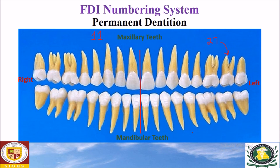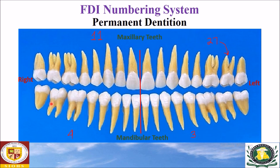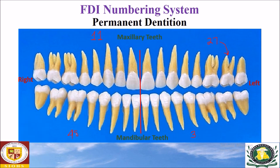The mandibular left quadrant is referred to as number three, and the mandibular right quadrant is given the number four. For the mandibular right third molar — this is the first molar, second molar, and third molar. The quadrant number is four, and counting from the midline: one, two, three, four, five, six, seven, eight — so this tooth is referred to as four eight in the FDI notation system.